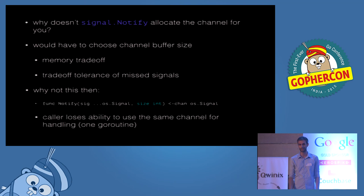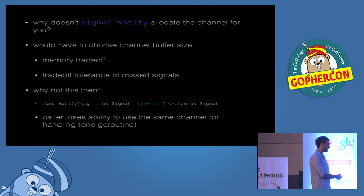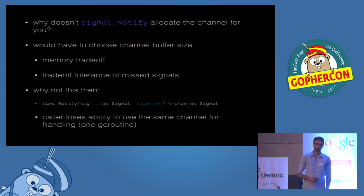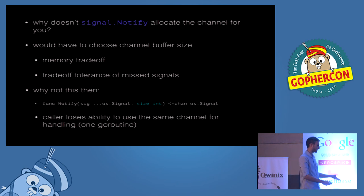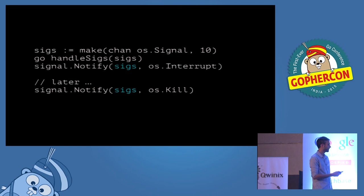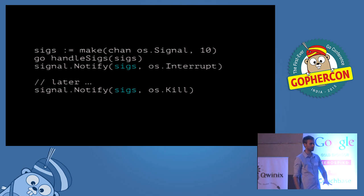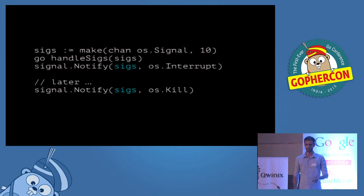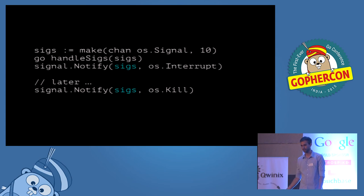You could imagine another API where it still returns the channel but you pass the size in. But when you do that, you force your caller into using a separate channel for every call. By passing the channel in as an argument, you can do multiple calls to `signal.Notify` but always pass in the same channel — handling signals from multiple calls with the same goroutine. If the channel were returned to you, every call would require spawning another goroutine, which is overhead on the scheduler and in memory.